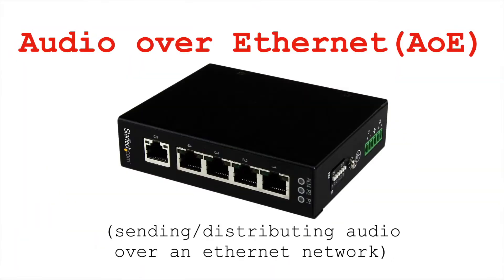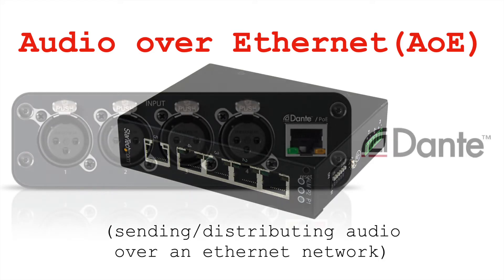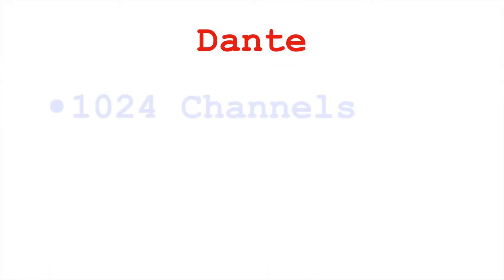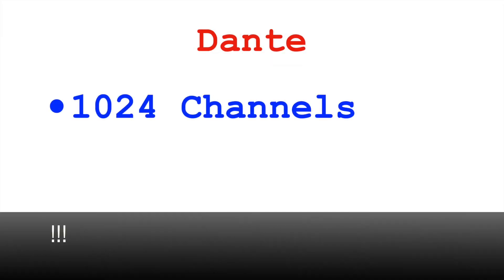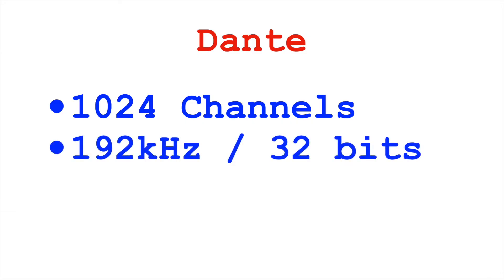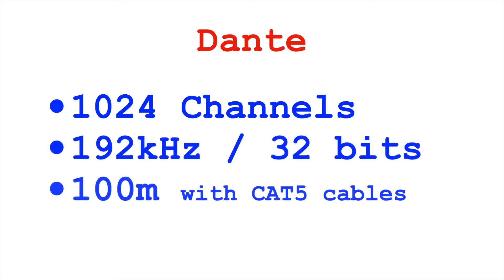For professionals, also worth noting is audio over ethernet — network audio — with, at the time of this video, the most well-known company being Dante. This can send up to 1,024 channels of 192kHz audio at 32 bits, and can be useful for sending digital audio, for example, from a concert hall to a control room or a nearby studio.